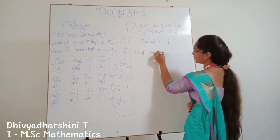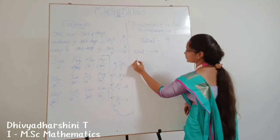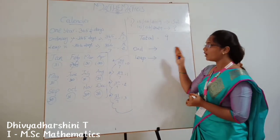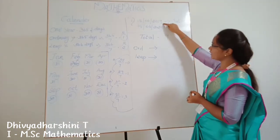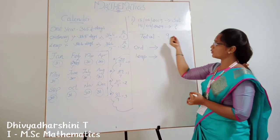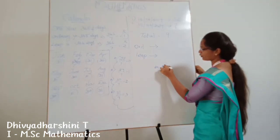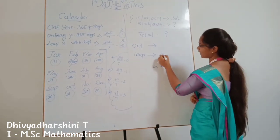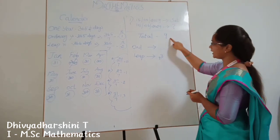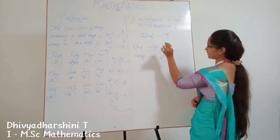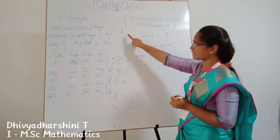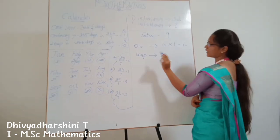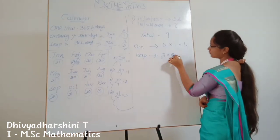Within those 9 years, we identify ordinary years and leap years. Leap years are multiples of 4: 20, 24, 28 — that gives us 3 leap years. So ordinary years = 9 minus 3 = 6. The remainder for ordinary years: 6 × 1 = 6. The remainder for leap years: 3 × 2 = 6. We add these together.